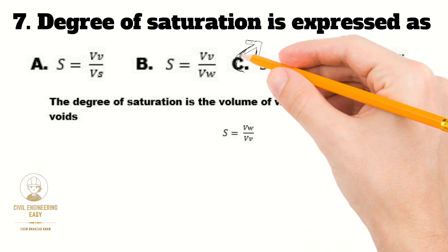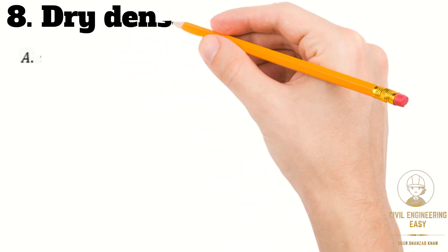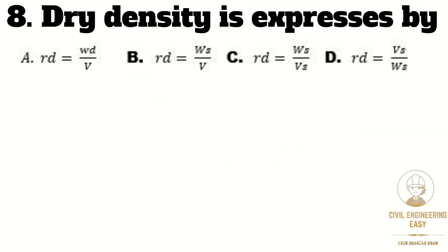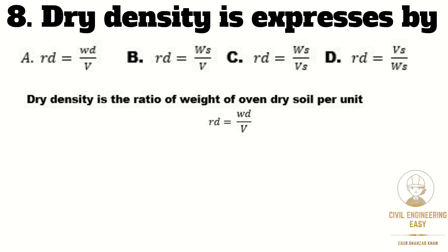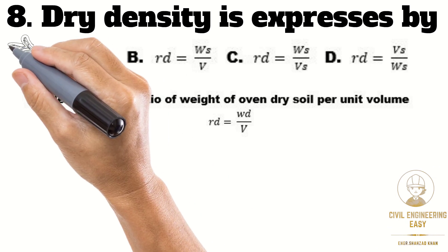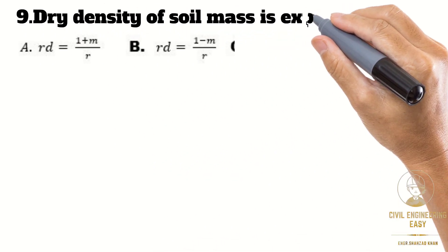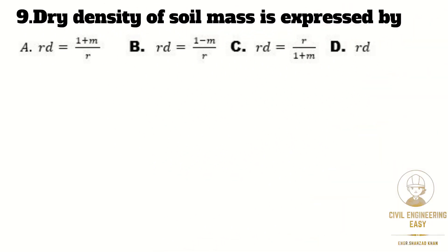In MCQ number eight, dry density is expressed as the ratio of weight of dry soil per unit volume. The correct option is A.